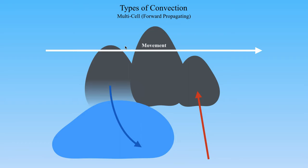There are two types of multicell thunderstorms: forward propagating and backward propagating. A forward propagating multicell has the cold pool and the cell movement both moving in the same direction. In this case, the cold pool is moving from left to right on screen, and the individual thunderstorms are also moving from left to right — the same direction. This is pretty typically what we observe in the atmosphere, such as a multicell moving from west to east with the cold pool also moving west to east. This is the thunderstorm mode you'd get from a squall line or quasi-linear convective system (QLCS).